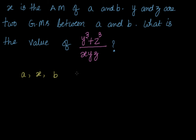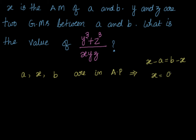The meaning of that is we know that x minus a should be equal to b minus x, or we can say x equals a plus b divided by 2. This is our equation number one, because we have to find out some value.